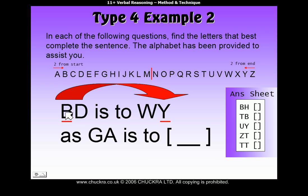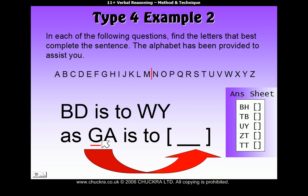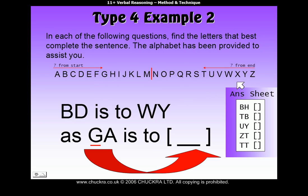B is the second letter from the start of the alphabet and Y is the second letter from the end, so B's partner letter is Y. To find our answer, we need to find the partner letter for G, which will be the second letter of our answer. G is the seventh letter from the start, so its partner must be seventh from the end: 1, 2, 3, 4, 5, 6, 7 — that's T. So the second letter of our answer is T.